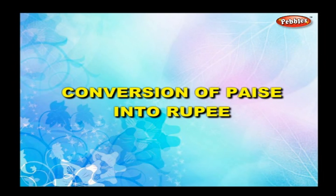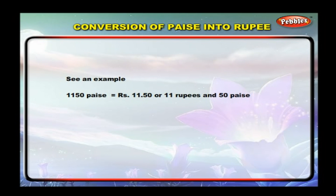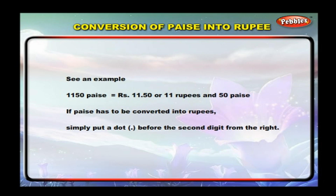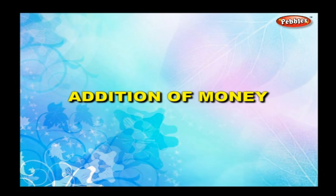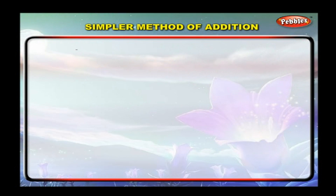Conversion of paisa into rupees: for example, 1150 paisa equals Rs. 11.50, or 11 rupees and 50 paisa. To convert paisa into rupees, simply put a dot before the second digit from the right.